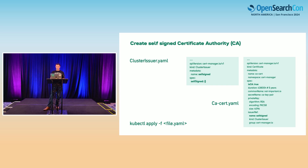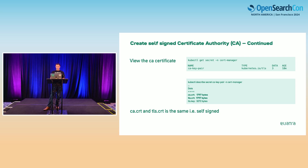There is a two-step process every time: we create a cluster issuer, and then we create a certificate. In this case, we create a cluster issuer which is self-signed — highlighted in bold — and the second step is to create the actual certificate on the right-hand side, using that cluster issuer. Every file in Kubernetes is applied with kubectl apply and then the file name. Once applied, we can see that the CA and the TLS cert are both the same size because it's the same file, which is where the name self-signed comes from.